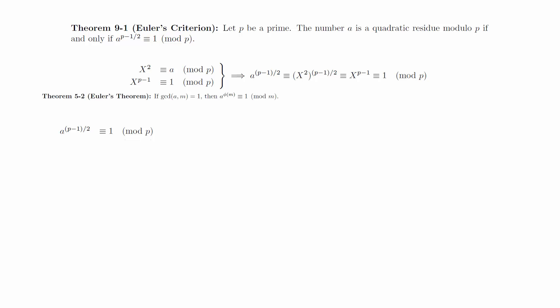Now suppose that a to the (p minus 1)/2 is congruent to 1 modulo p and let g be a primitive root modulo p. There exists an integer r such that g to the r is congruent to a mod p. By substitution, we get that g to the r/2 times (p minus 1) is congruent to 1 modulo p. Since the order of g is p minus 1, we know that p minus 1 divides r/2 times p minus 1, which implies that r/2 must be an integer. In other words, r equals 2s for some integer s. If we let x equal g to the s, we can see that x squared is congruent to a modulo p, so that a is a quadratic residue modulo p.